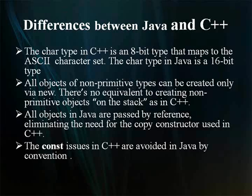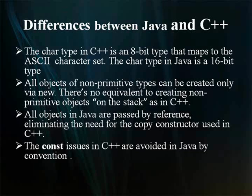In Java, all objects of non-primitive types can be created only on the heap. There is no equivalent to creating non-primitive objects on the stack as in C++. There are wrapper classes for all primitive types, so you can create equivalent heap-based objects with new.